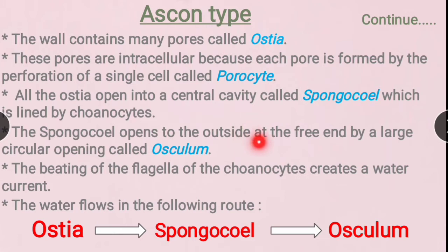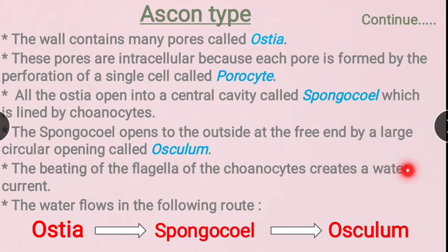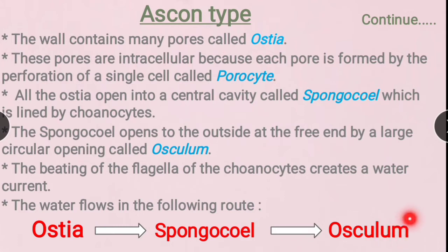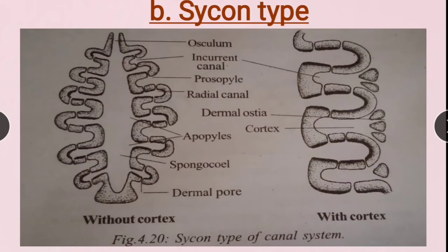The spongocoel opens to the outside at the free end by a large circular opening called the osculum. The flagellated cells beat and create a water current. Water enters through the ostia, passes through the spongocoel, and finally exits through the osculum.